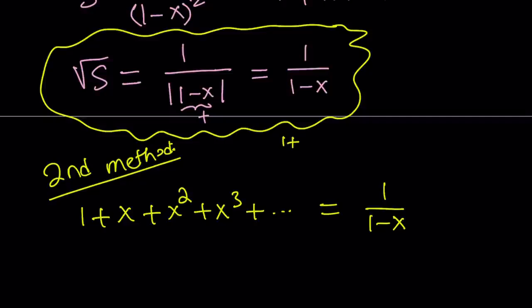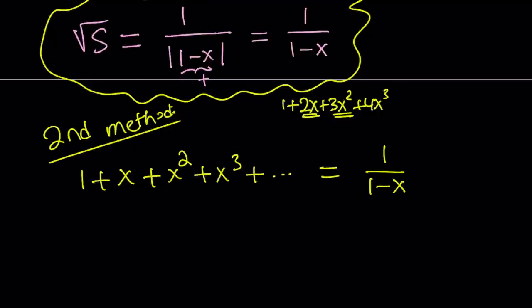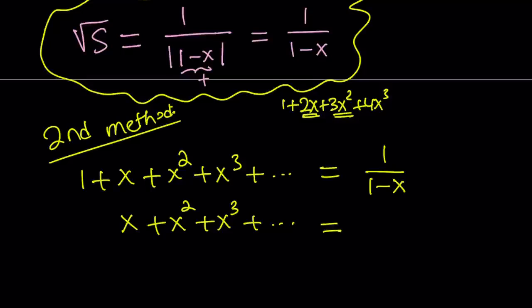Our sum looks like 1 plus 2x plus 3x squared plus 4x cubed under the radical. The higher the powers, the more we need them — you need x twice and x squared three times. We can obtain this sum by shifting our series in a smart way. What happens if I add to the original series x plus x squared plus x cubed and so on? Adding in columns, you get 1 plus 2x. We got the first two terms, but we're only getting 2x squared, not 3x squared. This shifted part is nothing but x times the first series, so it can be written as x over 1 minus x.